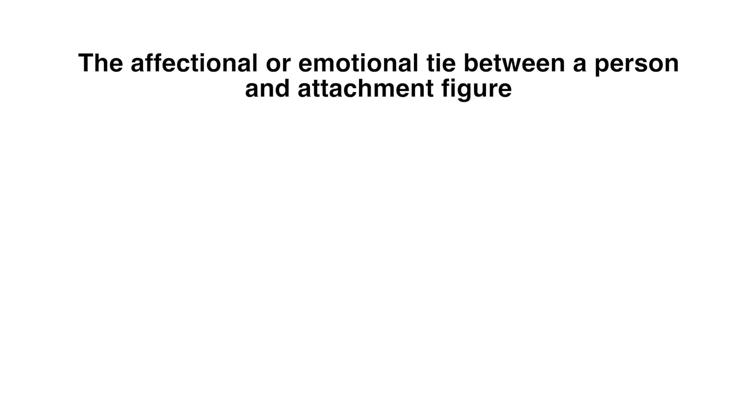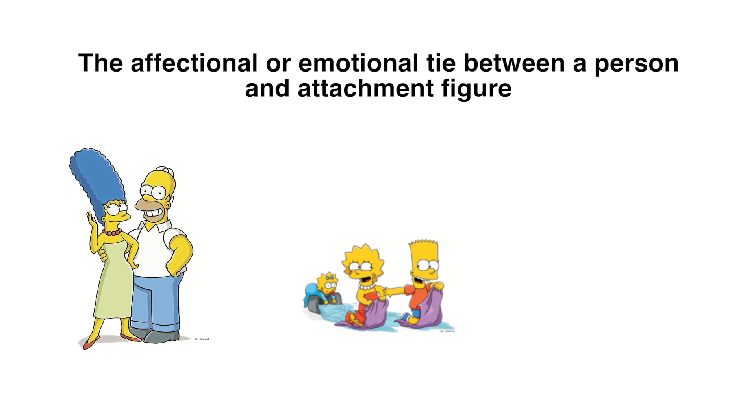Attachment is the affectional or emotional tie between a person and the attachment figure. This can be between two adults, two children, a child and an adult, and so forth. But why do people differ in attachment styles? Why are some people considered cold and distant while others are considered really clingy? In the 1960s, John Bowlby began developing his theories on attachment.